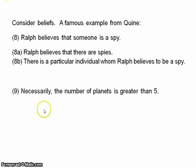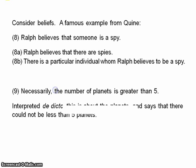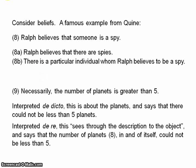So back to modality. 'Necessarily, the number of planets is greater than five.' We could interpret this de dicto as being about the planets and saying that there could not have been fewer than five planets — and that seems to be false. On the other hand, we could interpret it de re as saying that the number of planets in and of itself is necessarily greater than five — and that seems to be true. So perhaps there isn't really a problem here; it just depends on whether we take the de dicto or the de re reading. We'll explore this in the next video, but I think that's enough for now.